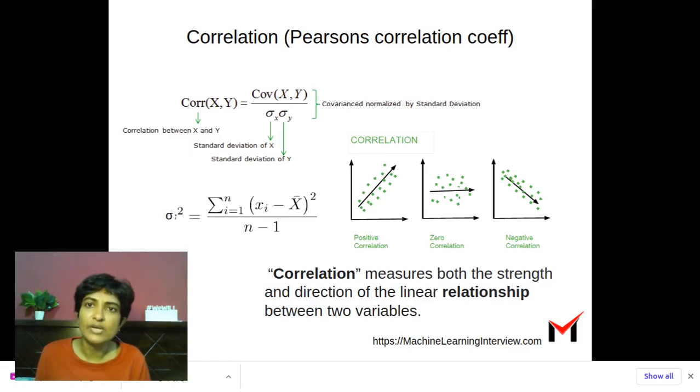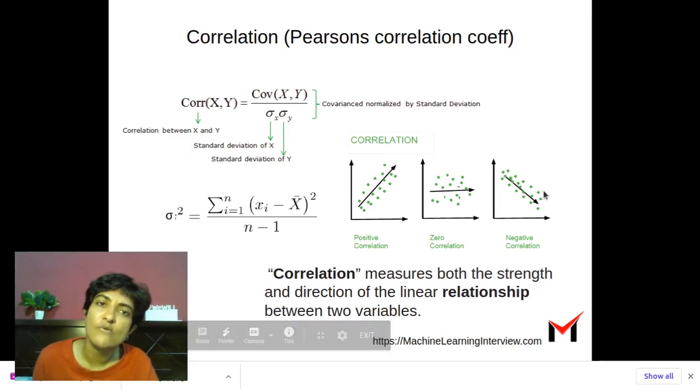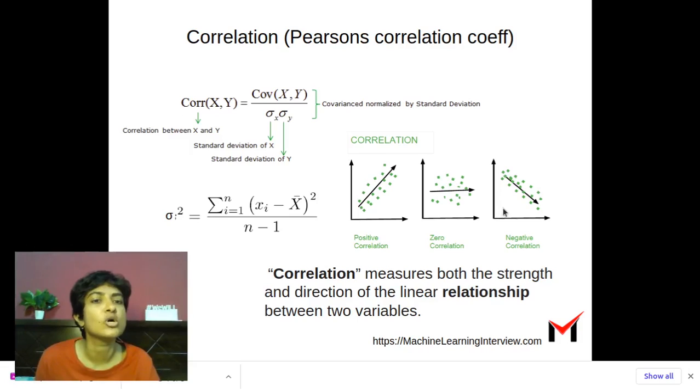So if we get a correlation coefficient value close to one, for instance in this case, it means there's a strong positive correlation. While a correlation coefficient value that is close to minus one indicates a strong negative correlation where one variable decreases with an increase in the other variable. And when we have zero correlation coefficient or something close to zero, we know that there is no correlation between these variables.